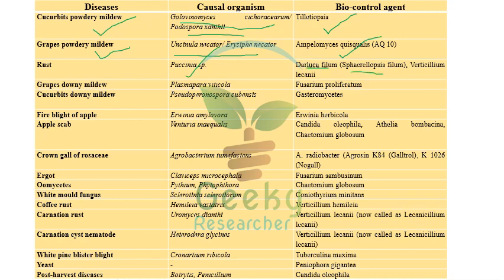For grape downy mildew caused by Plasmopara viticola, Pythium proliferatum is recommended. For cucurbit downy mildew caused by Pseudoperonospora cubensis, Gliomastix is recommended. For fire blight of apple caused by Erwinia amylovora, Erwinia herbicola is recommended as the biocontrol agent. For apple scab caused by Venturia inaequalis, Candida oleophila is recommended.